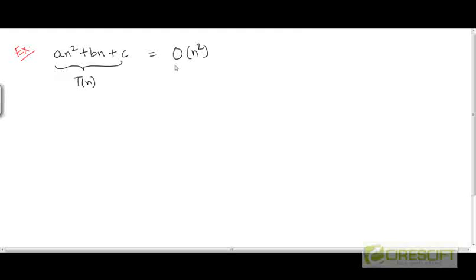Here is an example of a function that is O(n²). Consider this function T(n) = an² + bn + c, where a, b, and c are constants. Let's assume that a is a positive constant.